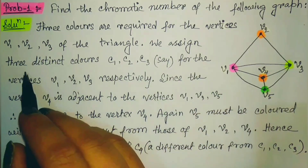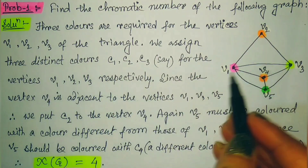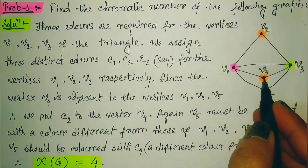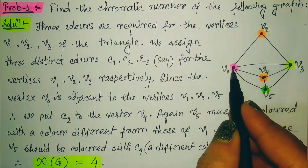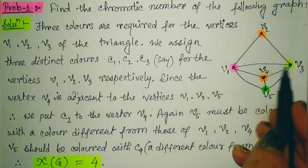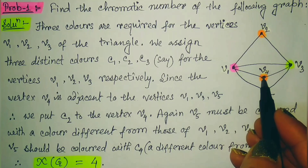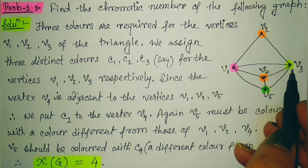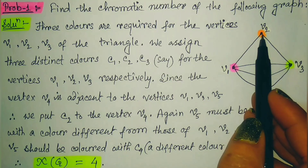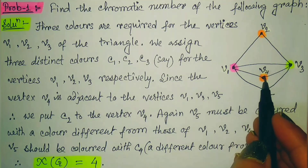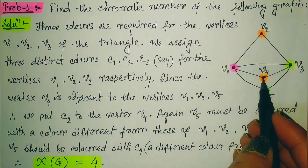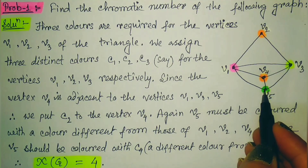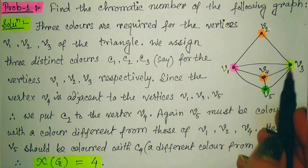We assign three distinct colors to those three vertices. Now since vertex v4 is adjacent to v1 and v3, it cannot get the color of v1 or v3. So we give v4 the same color as v2.